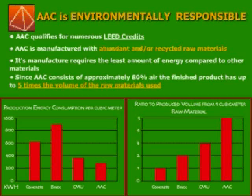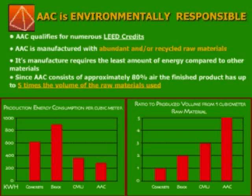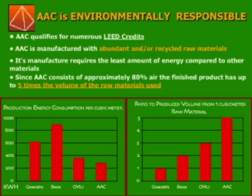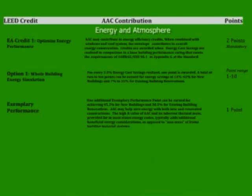Now look at the right graph. Because AAC consists of 80% air, the finished product has up to 5 times the volume of the raw material. You need only 1 cubic meter of raw material to produce 5 cubic meters of AAC, while for concrete, you need 1 cubic meter of raw material to produce 1 cubic meter of concrete.